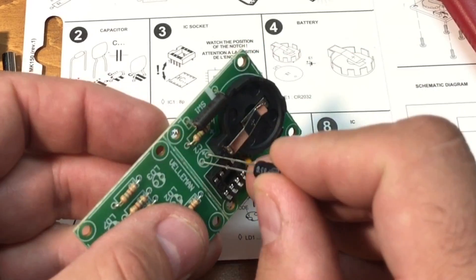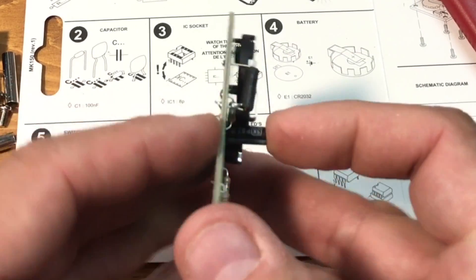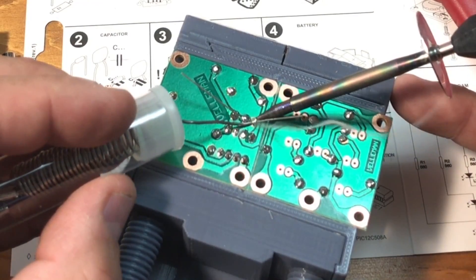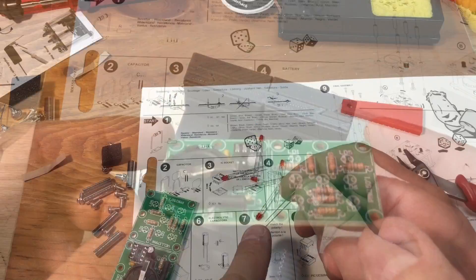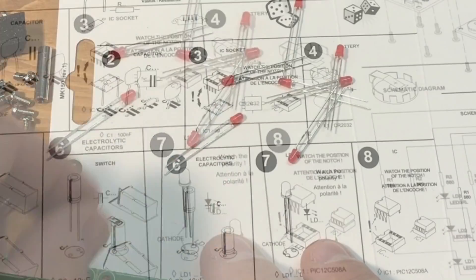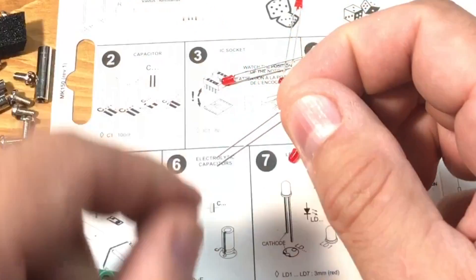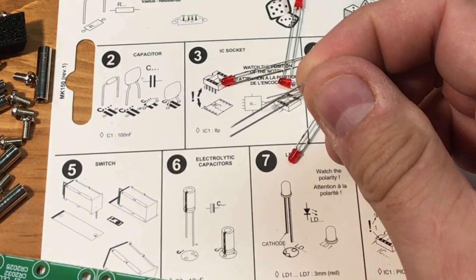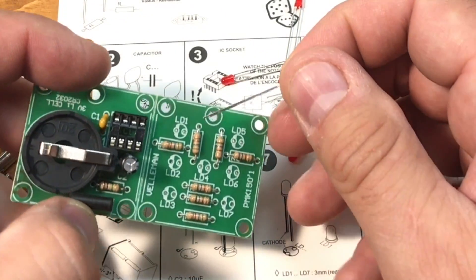The next step, step 6 was a capacitor. Notice that one lead is longer than the other. This is an electrolytic capacitor so it has polarity. The longer lead has to go in the slot where there's a plus sign. That's the same thing with LEDs. LEDs have one lead longer than the other. The longer lead is the positive. So that has to go where it's marked positive.